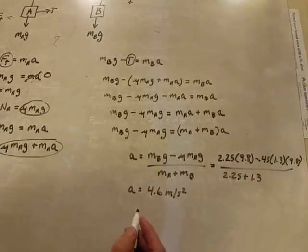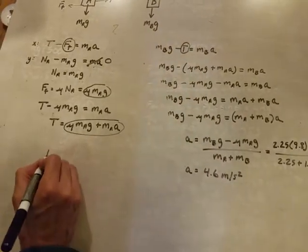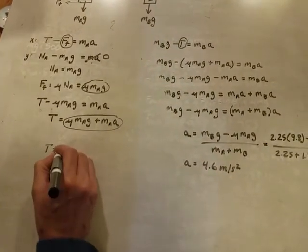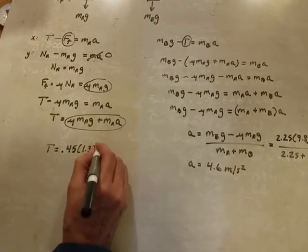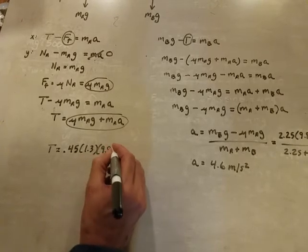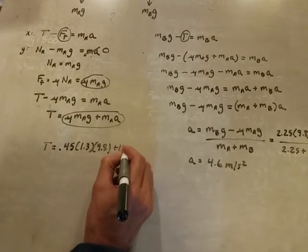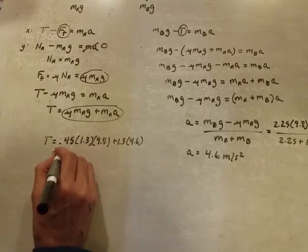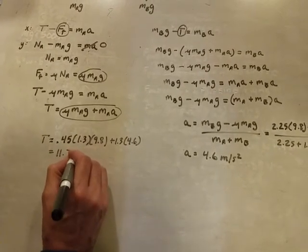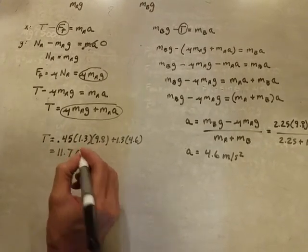So then we can figure out what T is. This is 0.45 times 1.3 times 9.8 plus 1.3 times 4.6, which is 11.7 newtons.